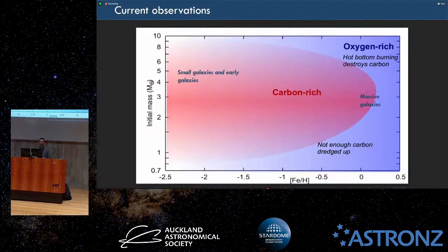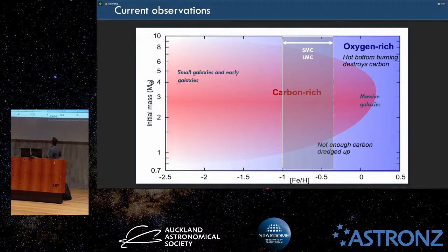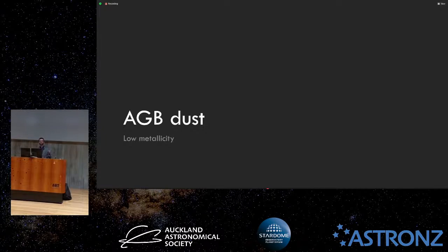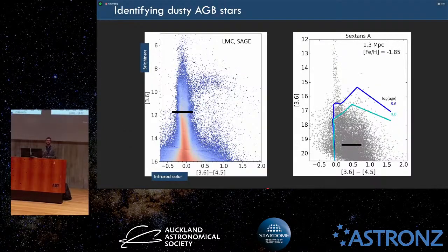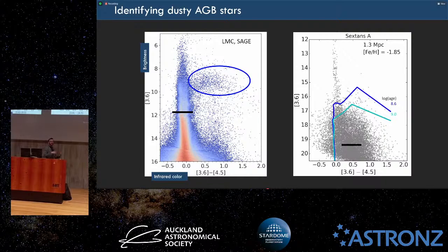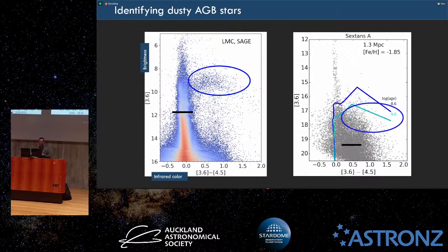Most of our data is in the middle range of metallicity — we can hope, assume, and extrapolate, but we really need data on the metal-rich and metal-poor sides. In the metal-poor regime, the color-magnitude diagram is great — you can identify evolved stars pretty easily. But for more distant galaxies, the stars we want to look at become fainter while the background galaxies stay the same. So we can't use this method for more distant galaxies and need to use something else.